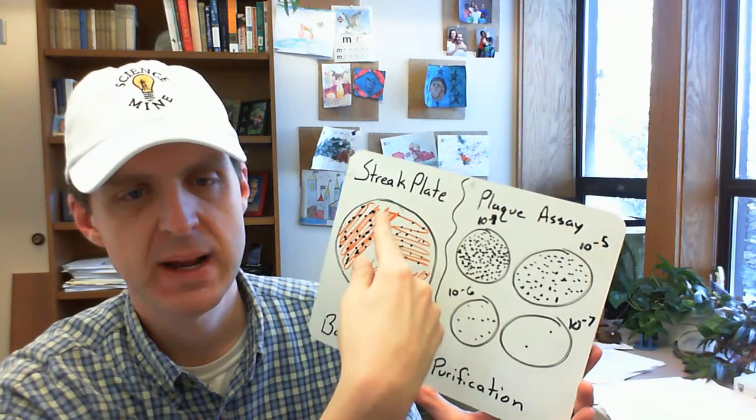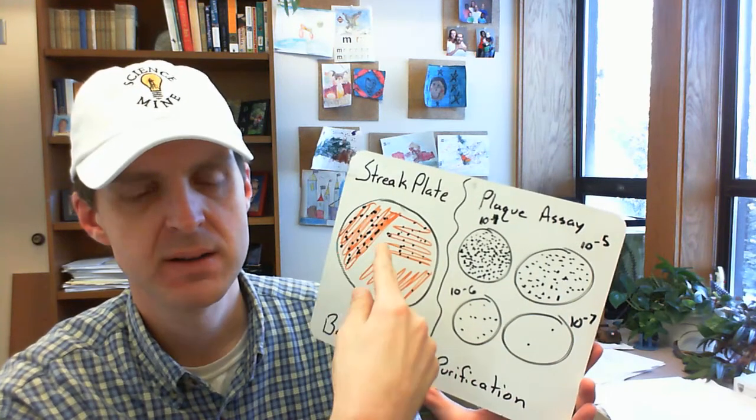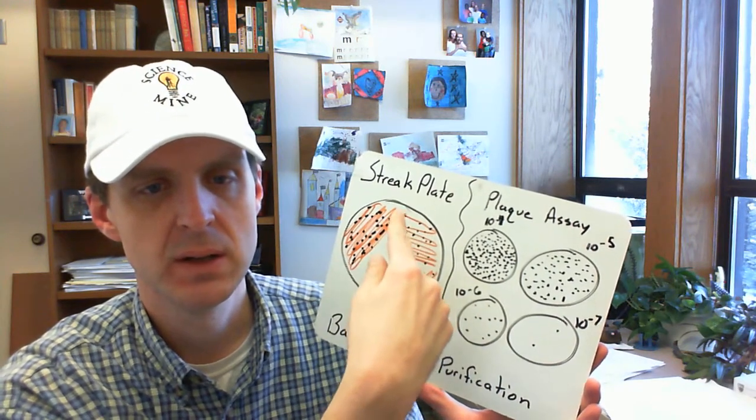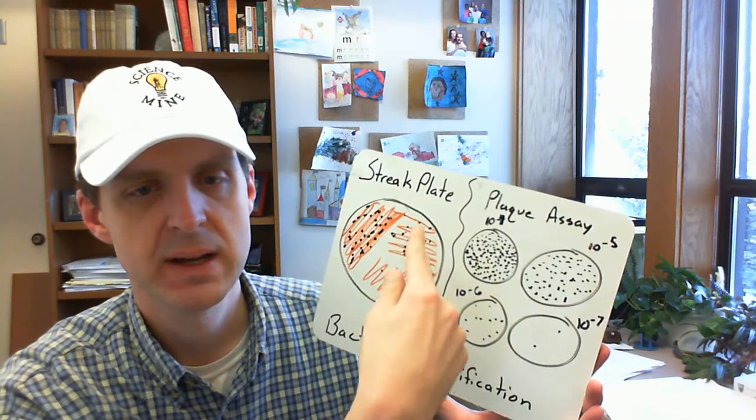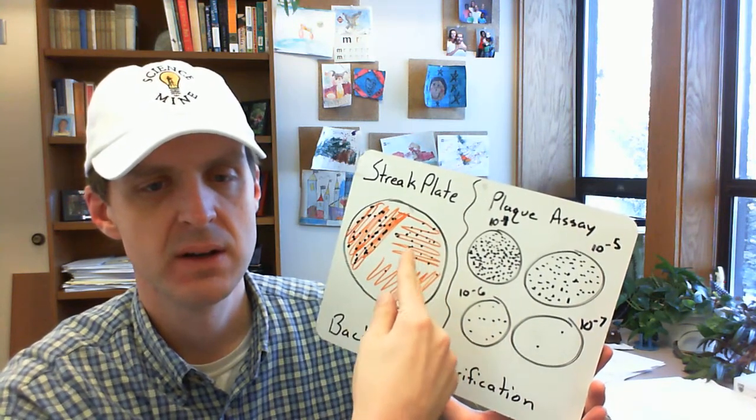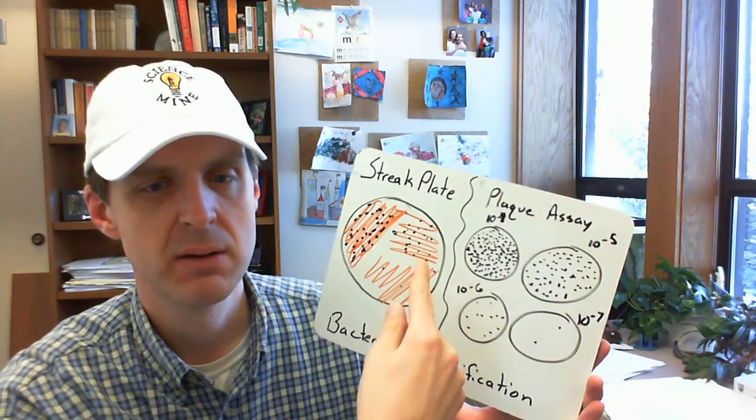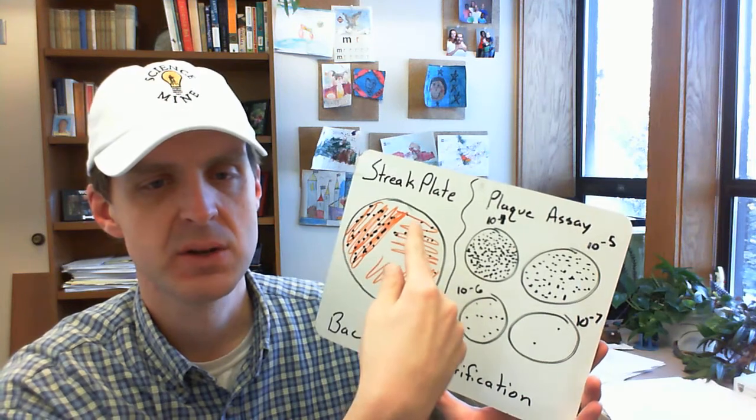You start out towards the end and then you work your way towards the middle and then you get a new tip and then you drag it through that area where there's probably a lot of virus and you then drag it through a little bit of that area and then streak it out.